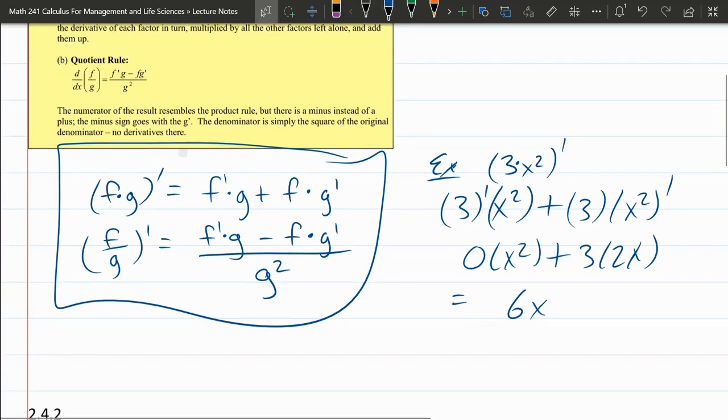So you don't need to use the product rule on constant multiples. It's a waste of time. It'll get you the right thing, but this will always come out to zero.